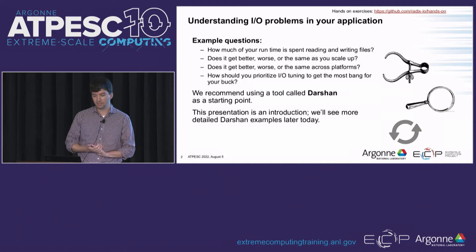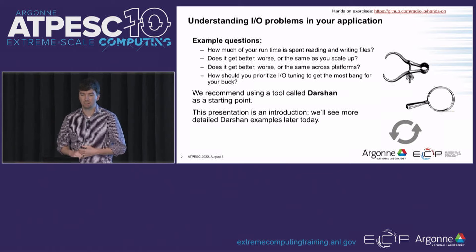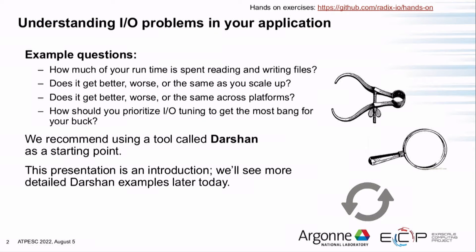It's an important problem. Some example questions you might have are: how much time is spent reading and writing files, how does that compare to the overall runtime, are you spending a majority of your time in IO or is it negligible, does it get better or worse as you scale up, does it differ across different platforms, and how should you prioritize your IO tuning to get the most bang for your buck?